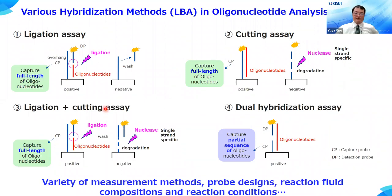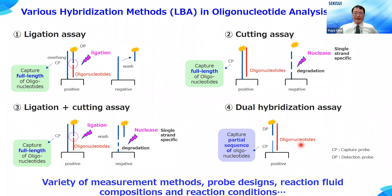Also, as I show in number three, we have a combination method to use both ligases and nucleases. The alternative is to use two different probes: capture probes and detection probes. These probes hybridize with the partial sequence of an analyte oligonucleotide, respectively. The detection probes will be washed away when the sequence is not matched with the analyte oligonucleotide. In this dual hybridization assay method, we don't have to use enzymes, which would make our assay procedure longer and more complex.